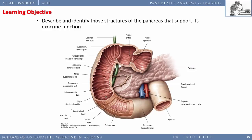Here's where the common bile duct and major pancreatic duct join. A gallstone stuck there blocks everything upstream — the liver can't drain, bile backs up causing jaundice, and pancreatic enzymes back up causing pancreatitis. This is gallstone-induced pancreatitis: gallstones stuck in the common bile duct backing up both systems. This is the common channel theory of gallstone pancreatitis.